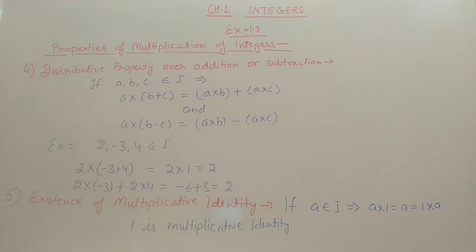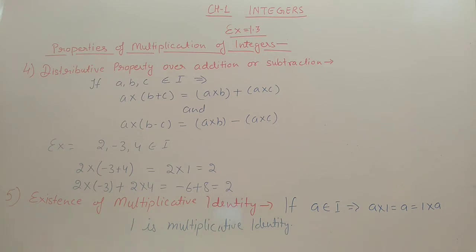Next we have the existence of multiplicative identity. It means a number which we multiply with any integer but the answer will not change. Here, 1 is that integer. If we multiply 1 with any integer, the answer will be the same.